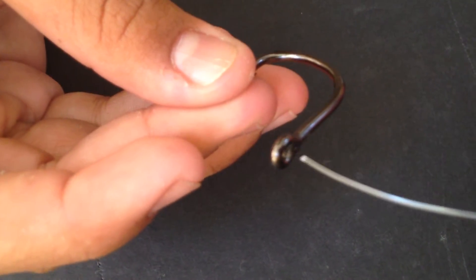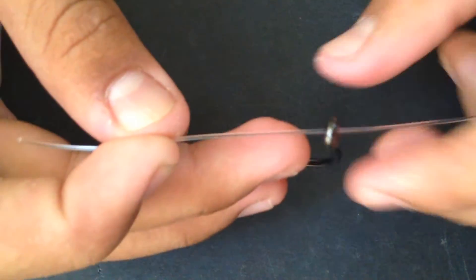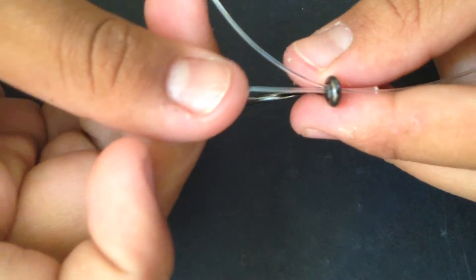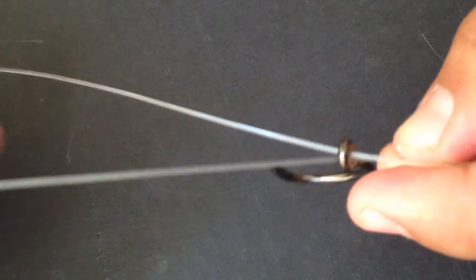So what I like to do is bring the line through the eyelet, pull it all the way through. Then from there, you bring your main line back through the eyelet, so you've created a loop.